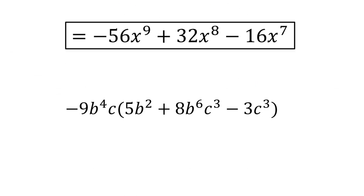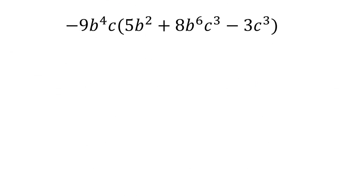Let's try one with multiple variables. We have negative 9b to the fourth c times 5b squared plus 8b to the sixth c to the third minus 3c to the third.